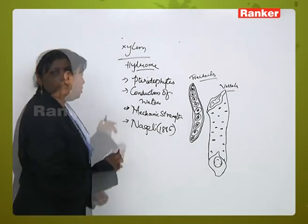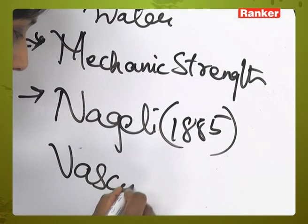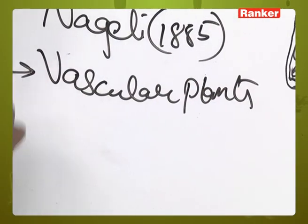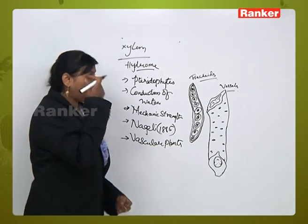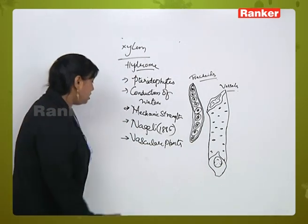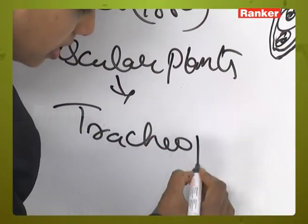Plants which have xylem tissue in them are called vascular plants, and these vascular plants are otherwise called tracheophytes.